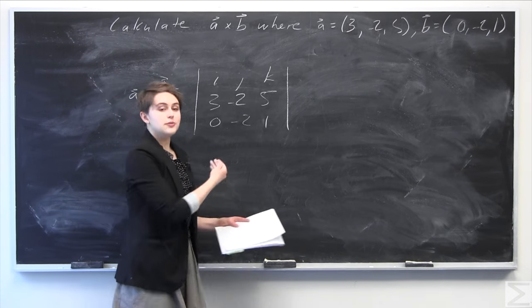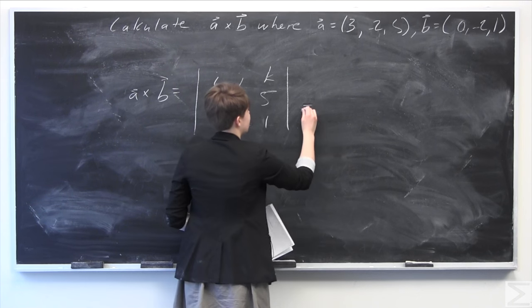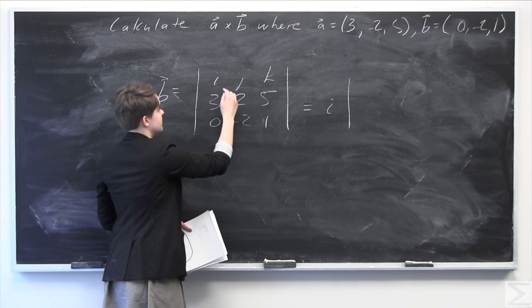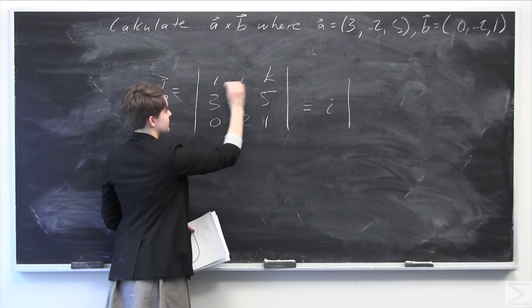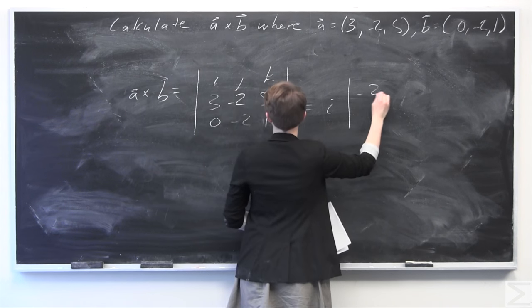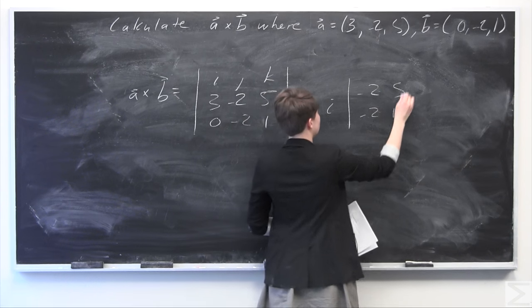We're going to calculate the determinant of this matrix using the formula. We have i here times this part. Crossing out this row and column, we're left with -2, 5, -2, 1.